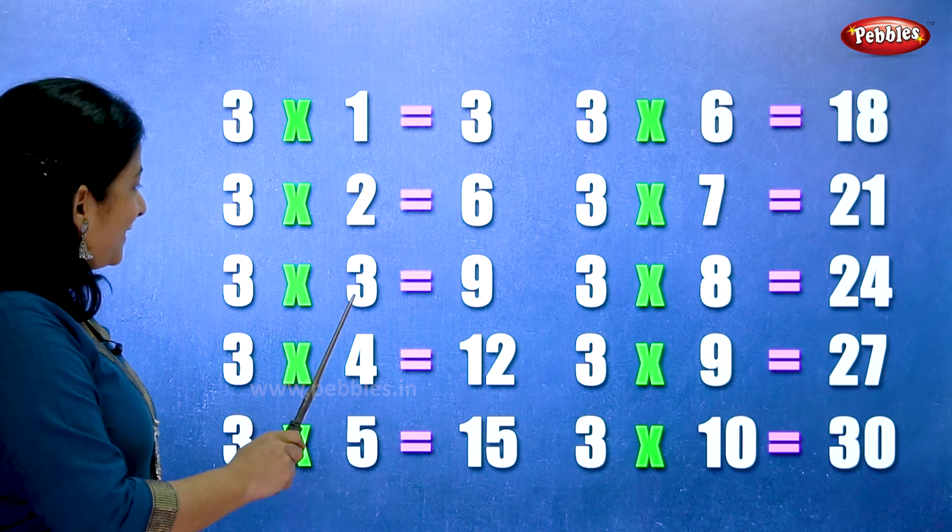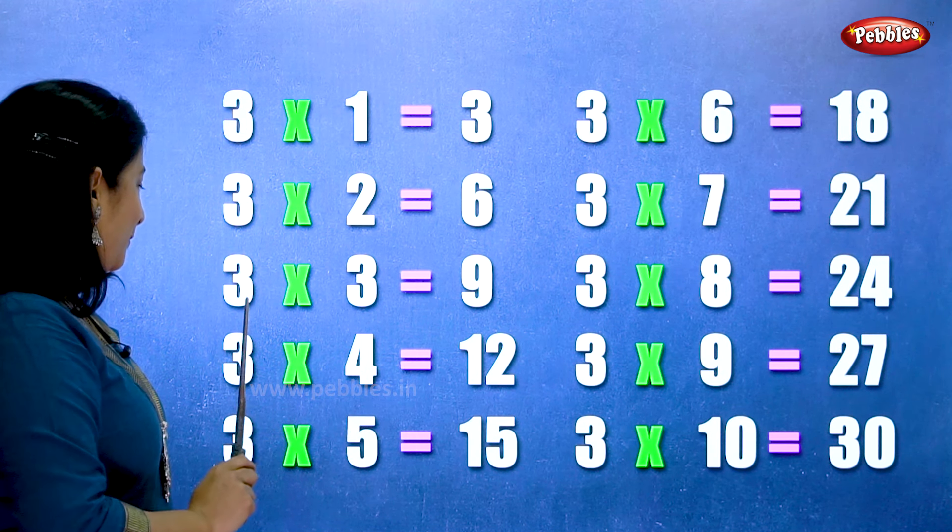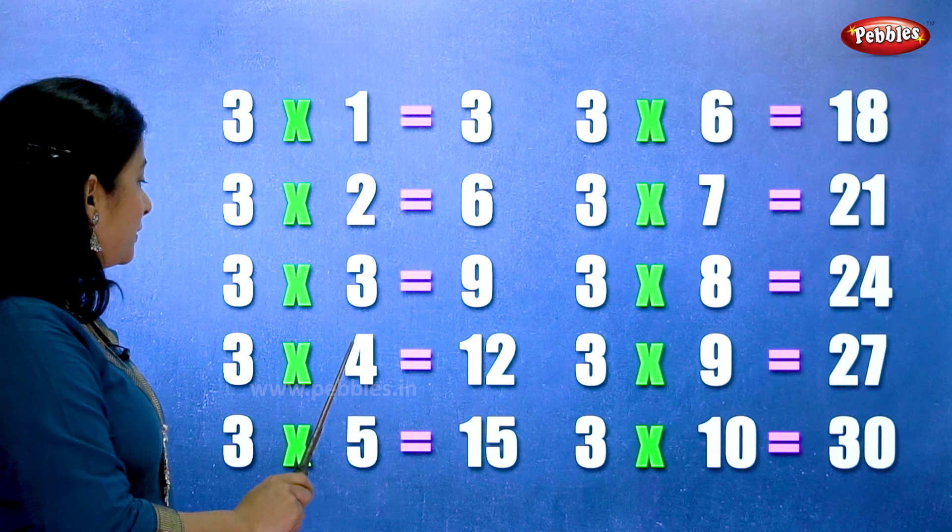Three threes are nine. Three fours are twelve.